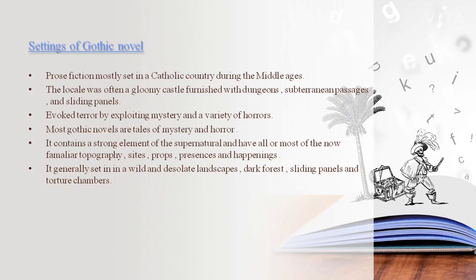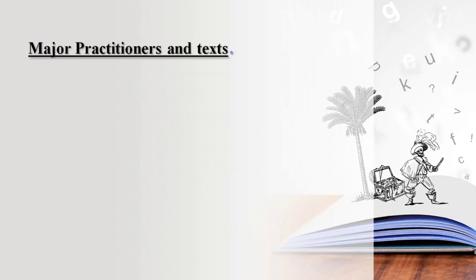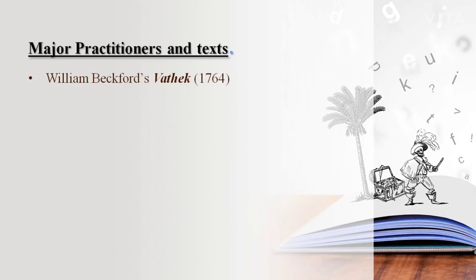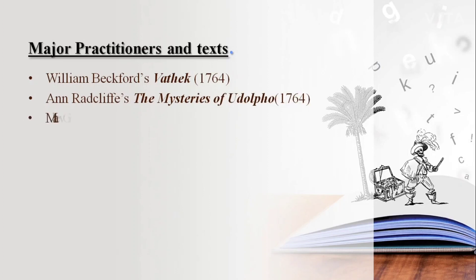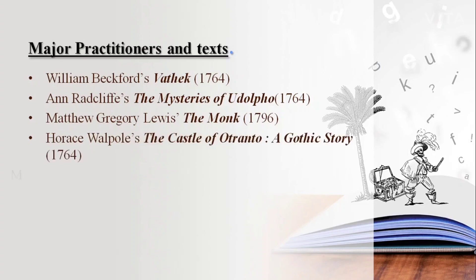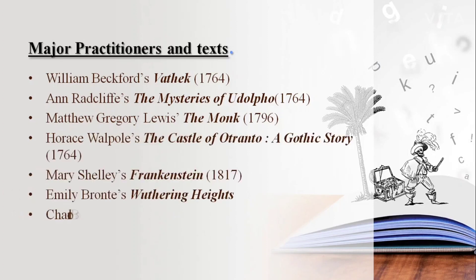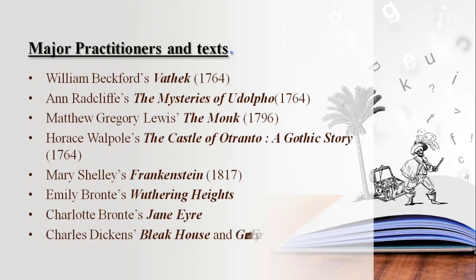The major practitioners and texts are: William Beckford's Vathek published in 1764, Anne Radcliffe's The Mysteries of Udolpho, Mary Shelley's Frankenstein, Matthew Gregory Lewis's The Monk, Horace Walpole's The Castle of Otranto, Emily Brontë's Wuthering Heights, Charlotte Brontë's Jane Eyre, Charles Dickens's Bleak House and Great Expectations, and Iris Murdoch's The Unicorn.